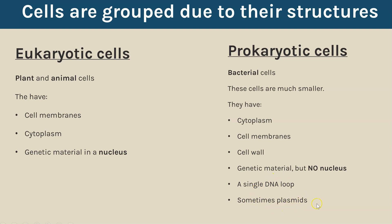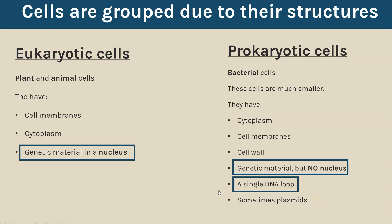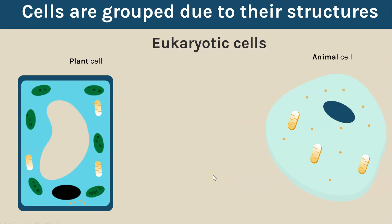They also sometimes have an extra circular loop of DNA called a plasmid. If you were answering an exam question on similarities between eukaryotic and prokaryotic cells, the best two to go for are cell membranes and cytoplasm, as these are consistent across plant, animal, and bacterial cells. If asked to point out a difference, the best answer would be that eukaryotic cells have a nucleus containing genetic material, whereas prokaryotic cells do not have a nucleus and their genetic material is just a single loop found in the cytoplasm.